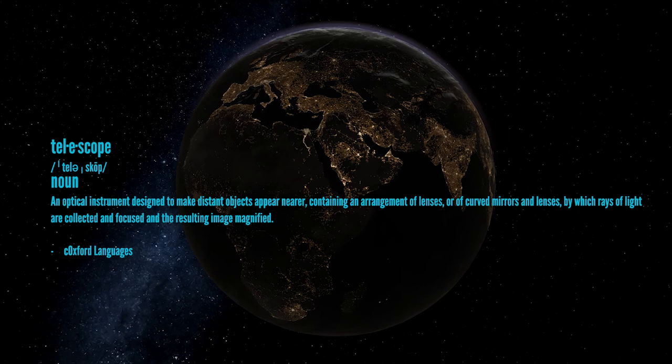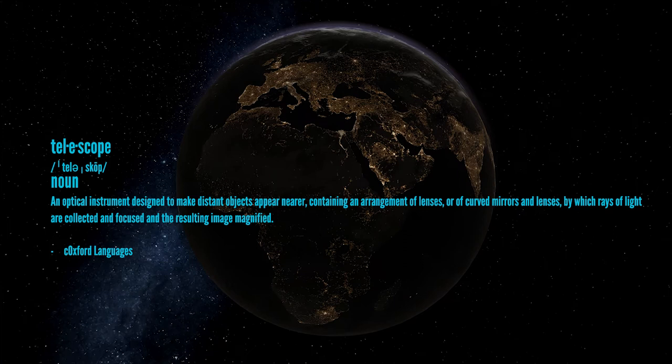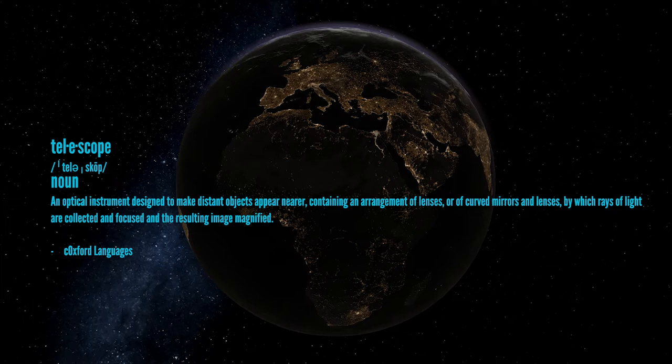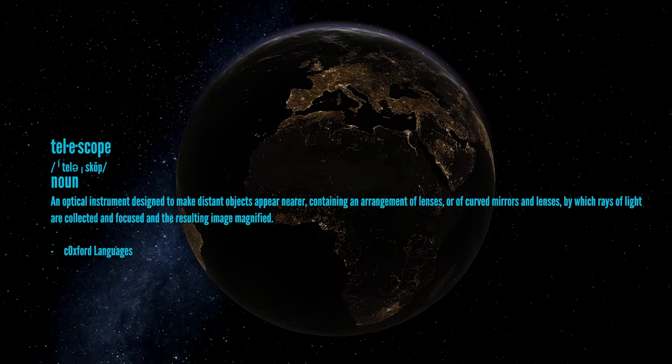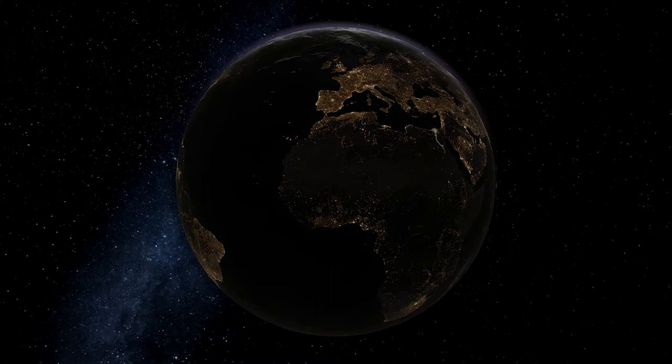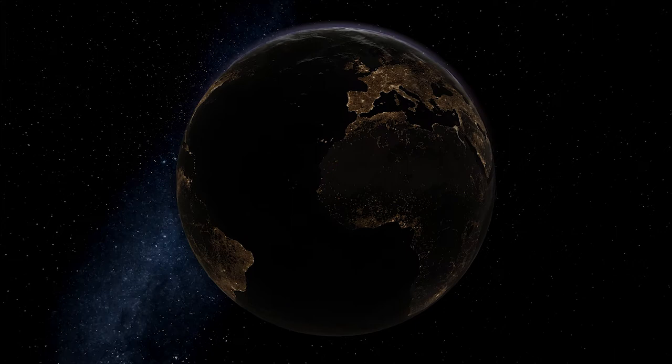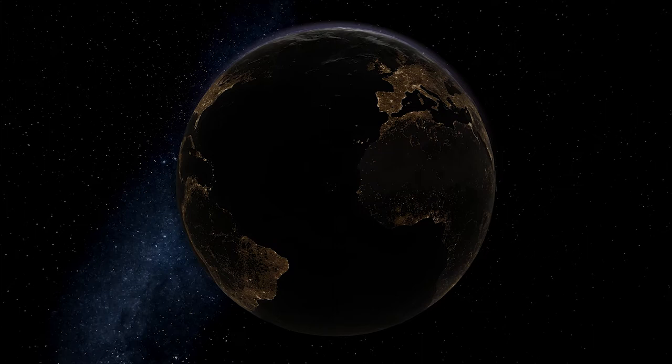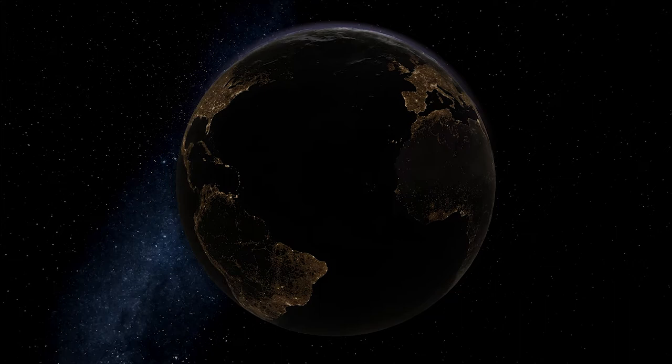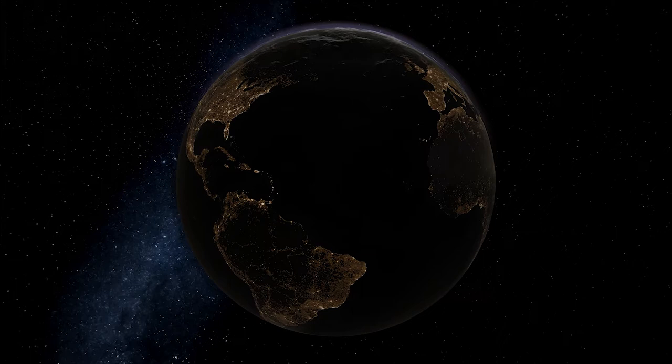A telescope is defined as an optical instrument designed to make distant objects appear nearer, containing an arrangement of lenses or curved mirrors and lenses by which the rays of light are collected and focused and the resulting image magnified. As a general statement, a telescope is usually held in position by a base or a tripod, or sometimes mounted on pedestals cemented into the ground. One end points towards something in the distance, and a small protrusion, an eyepiece, is where you put your eye to see something that's probably extremely far away.